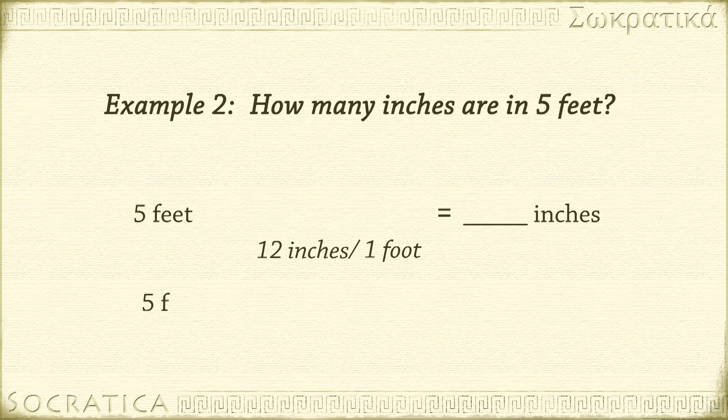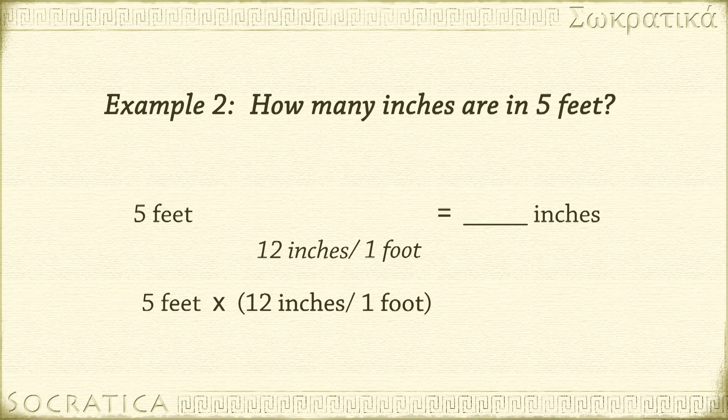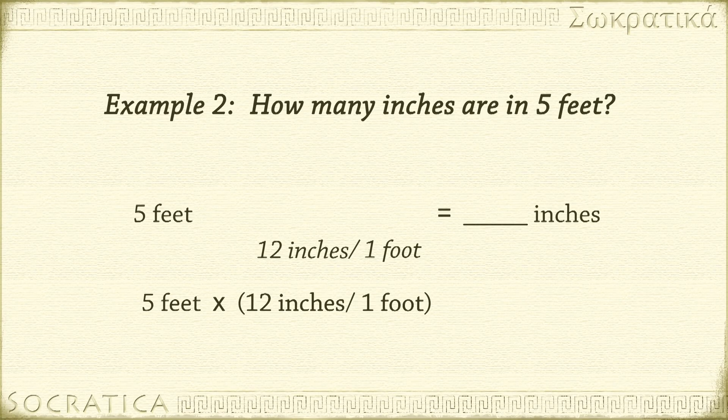I start with 5 feet, multiply by the conversion factor, so feet is on the bottom so it'll cancel. Inches is on the top, so inches will be the final units in my answer. 5 feet times 12 inches over 1 foot. Feet cancel. 5 times 12 equals 60 inches.